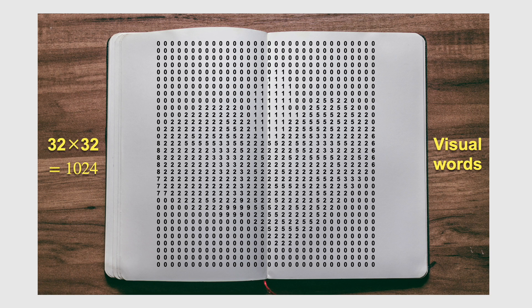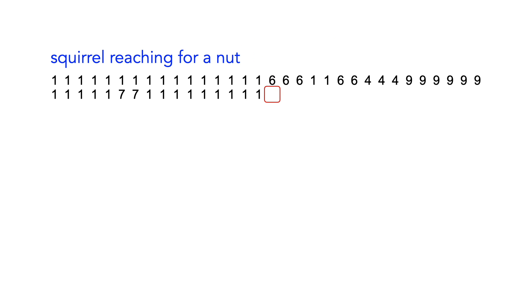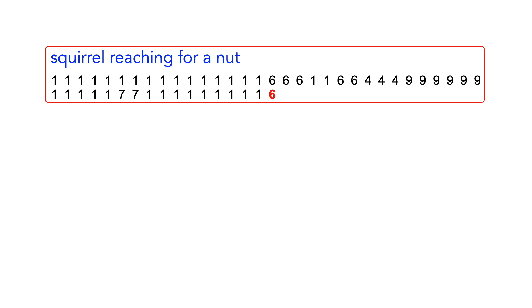Each word in this page ranges from zero to nine to make it easier to visualize. In reality, Parti uses about eight thousand different values for each word. Now let's generate some new images. We'll start with this prompt: squirrel reaching for a nut. This is what we give the language model as input. It will then start outputting visual words one at a time, from left to right and top to bottom. Each visual word depends on the previous ones. If we looked only at the most recent words, we'd predict one. But if you expand the window to include the previous row, you'd notice that it's changing to sixes in that position. And the language model will consider all of the previous visual words along with our text prompt in blue.